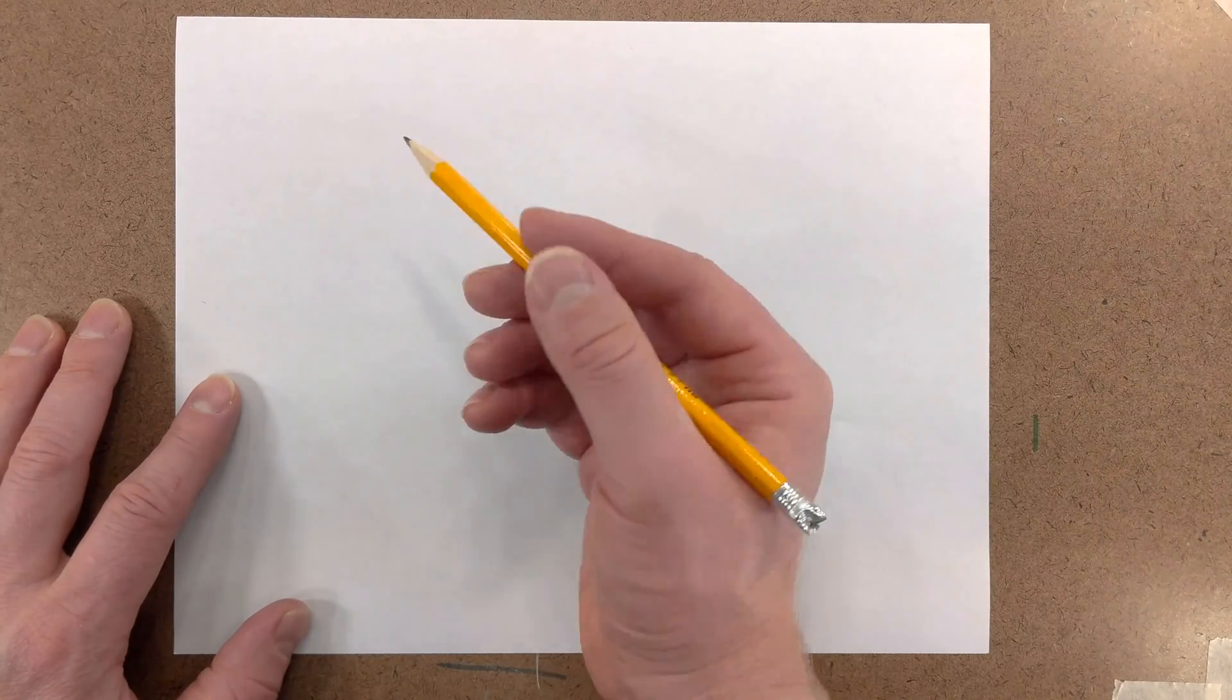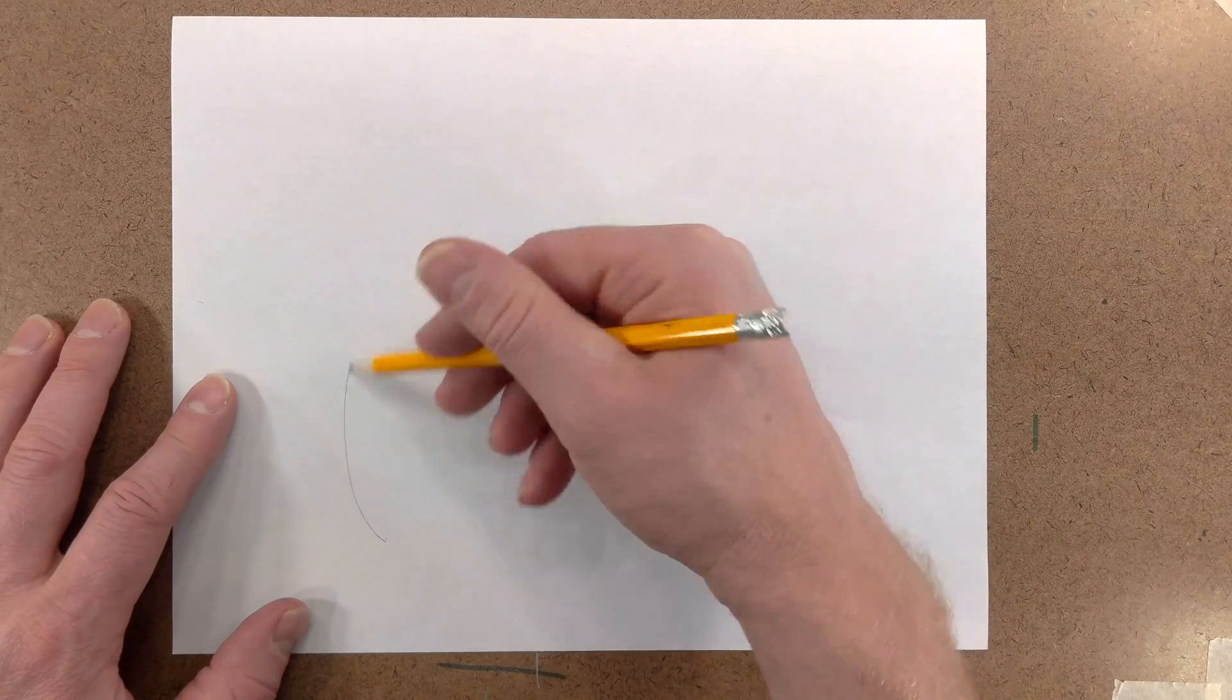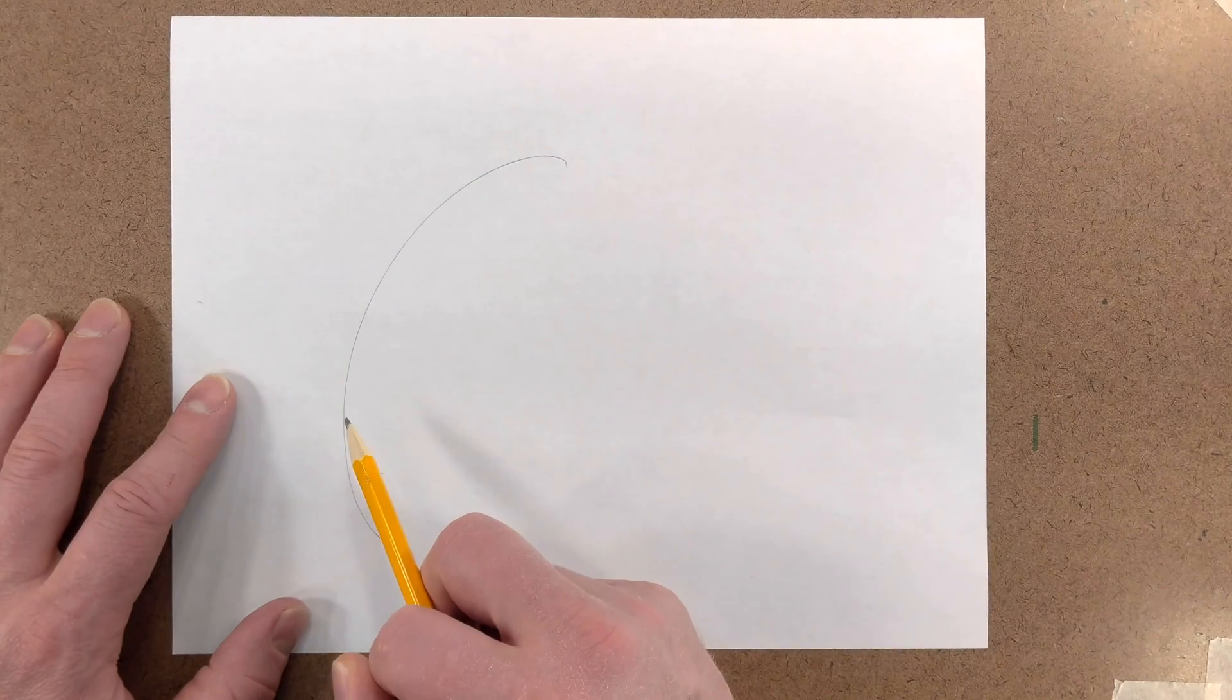When we're drawing straight lines, it's very important to hold your pencil nice and loose. And we don't want a floppy wrist. If you have a floppy wrist, you're just going to draw curved lines.